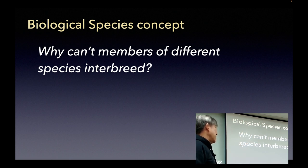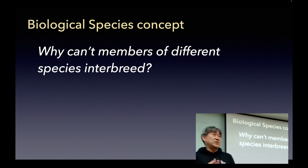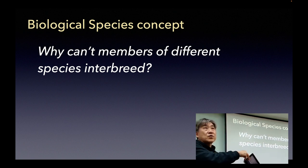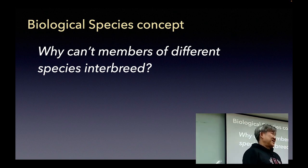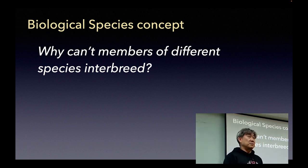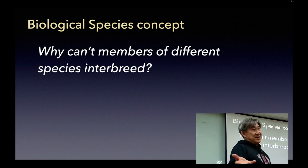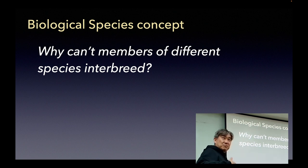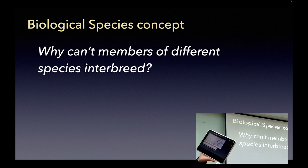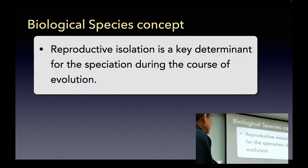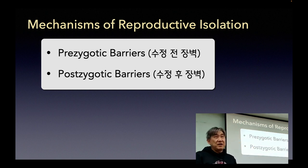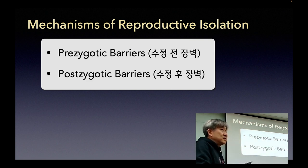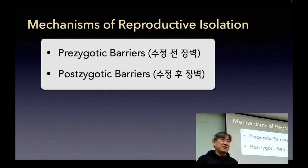Then the question is: why? Why can two individuals not interbreed? Let's focus on the animal case. Why can two randomly picked individuals not be made to breed to produce viable offspring? Because they are too different? But how? Why? Can we actually provide some systematic and reasonable answer? Why can't some individuals interbreed? There are several different reasons, as they put them as mechanisms.